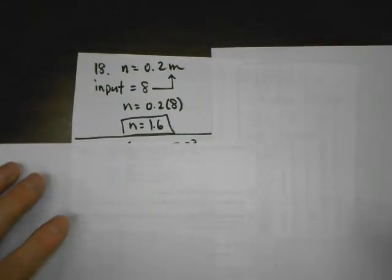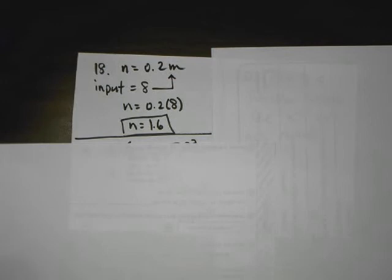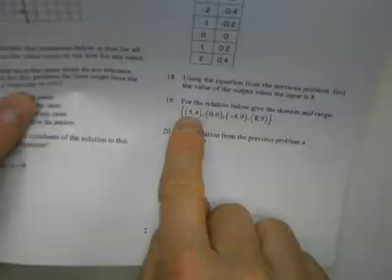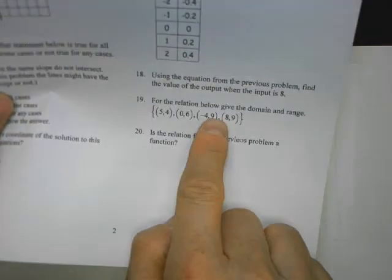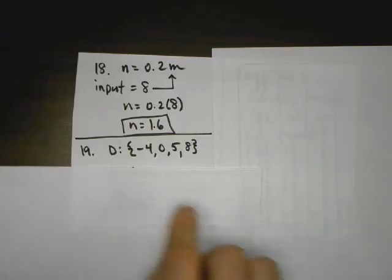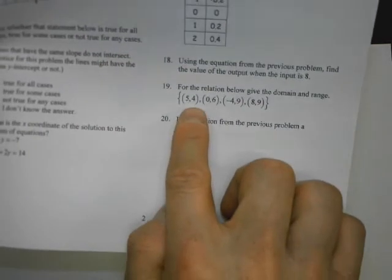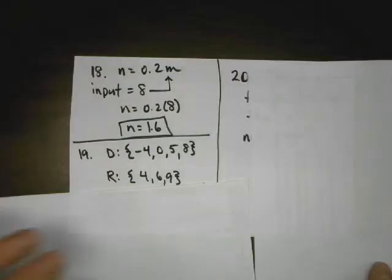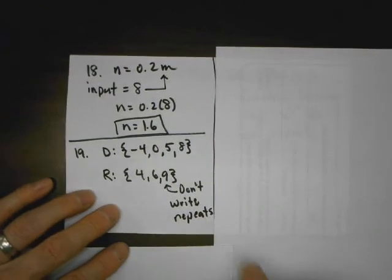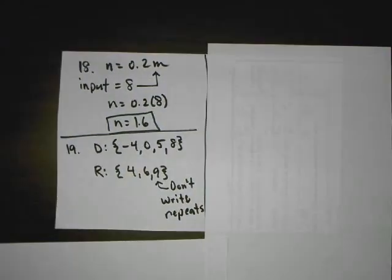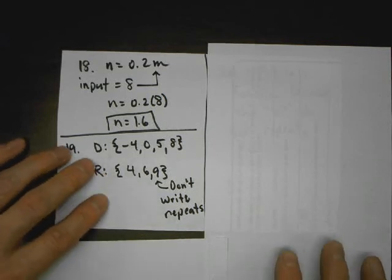For number 19, they ask for the domain and range. For the domain, I look at all my x's: 5, 0, negative 4, and 8, written in order from least to greatest. For the range, I look at my y's: 4, 6, 9, and another 9 — but you don't repeat, so I write them in order from least to greatest. And the last problem: is it a function? None of my x's repeats, so it is a function. Hope that helped.